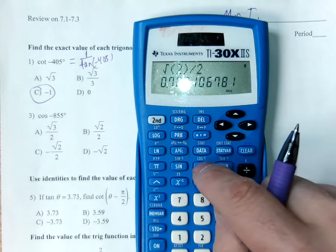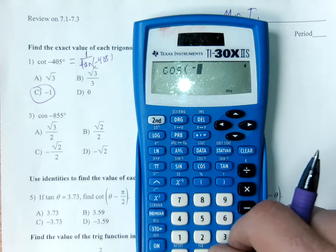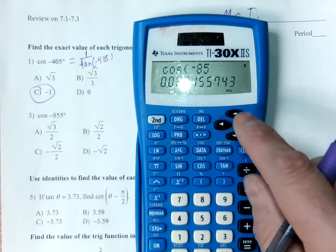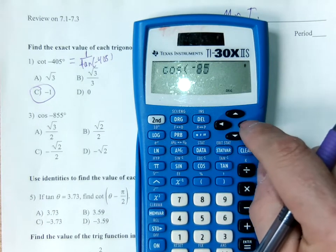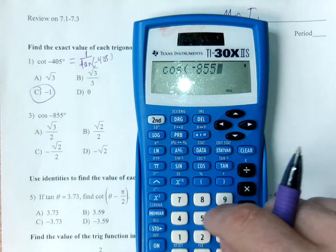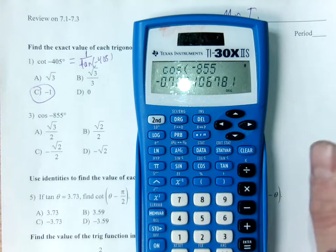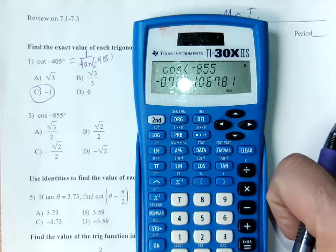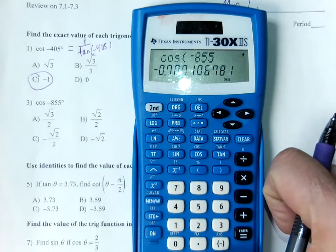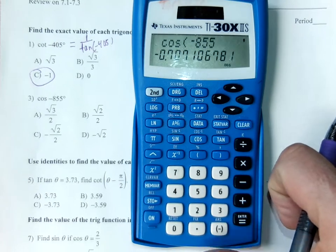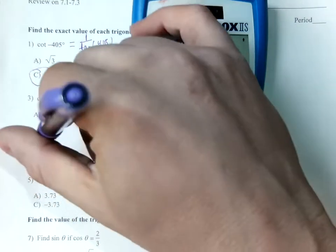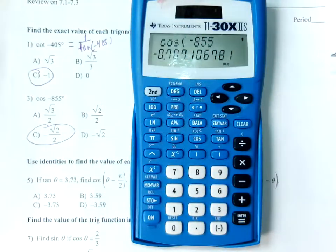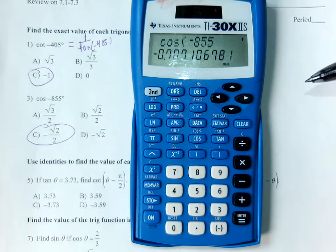Cosine of negative 855 gives negative 0.707. That's negative root 2 over 2, or the opposite of root 2 over 2.